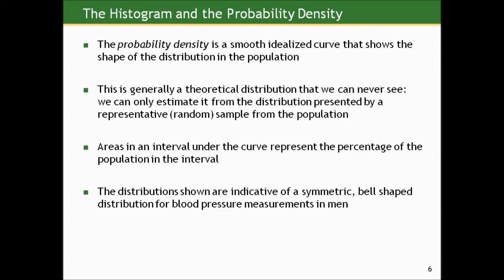What we just looked at is what I'd call the probability density — a smooth, idealized curve that shows the shape of the distribution in a population. We're never going to see this; this is a theoretical construct. We can only estimate it from the distribution presented by a representative sample from that population. Areas under the curve of this probability density represent the percent of the population in any given interval, and we can estimate those by taking the comparable areas under the sample distribution curves. The distributions we saw for blood pressure were indicative of a symmetric bell-shaped distribution for all blood pressure measures in men.